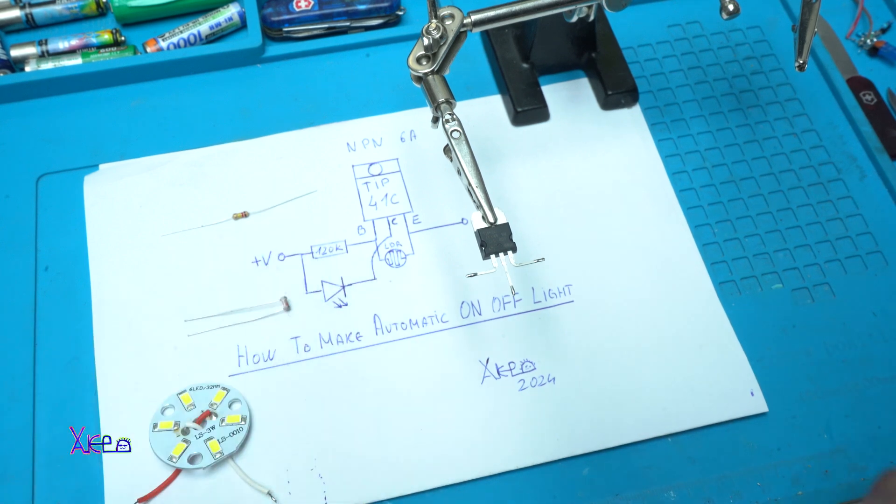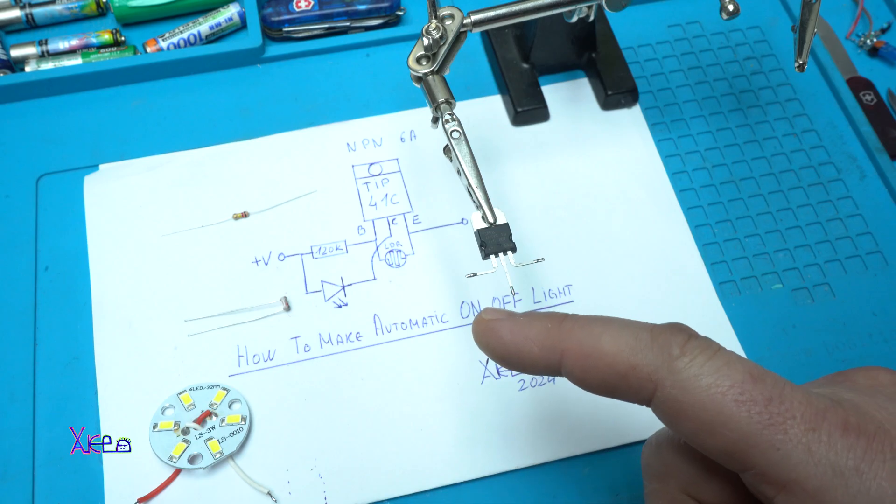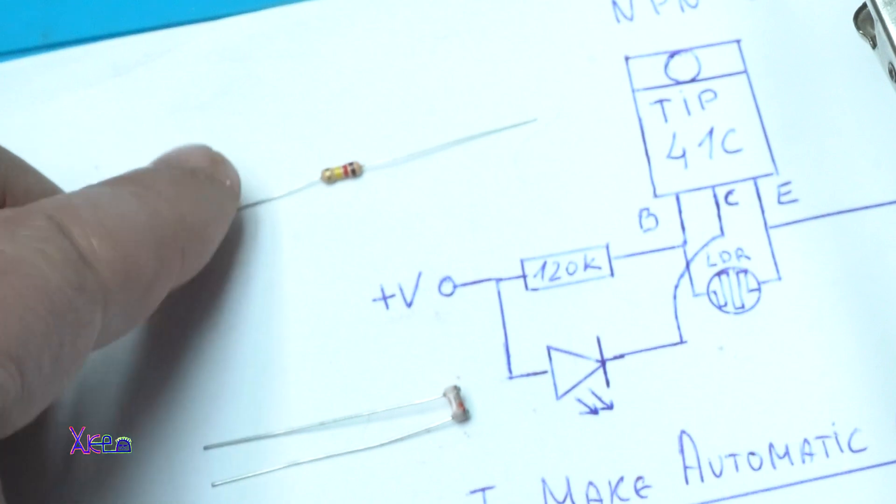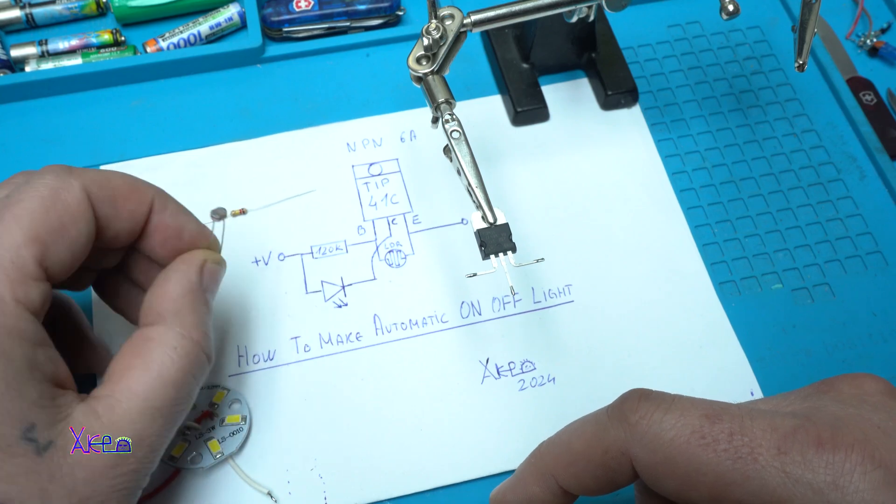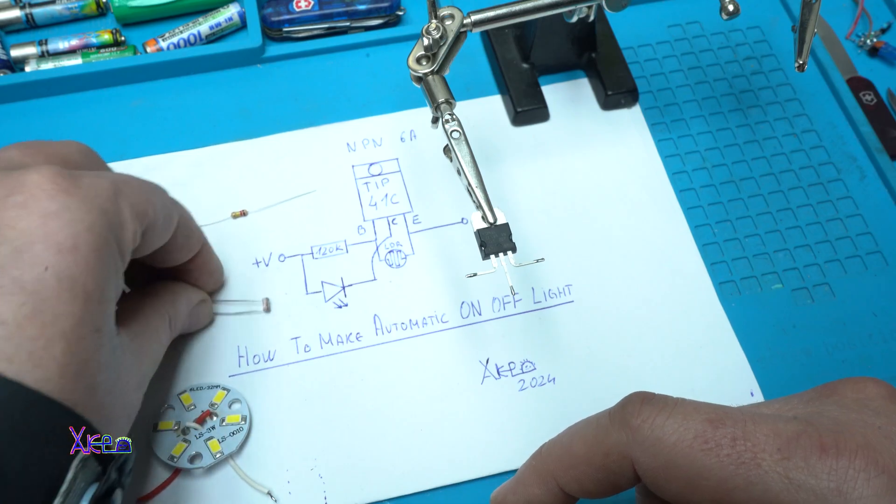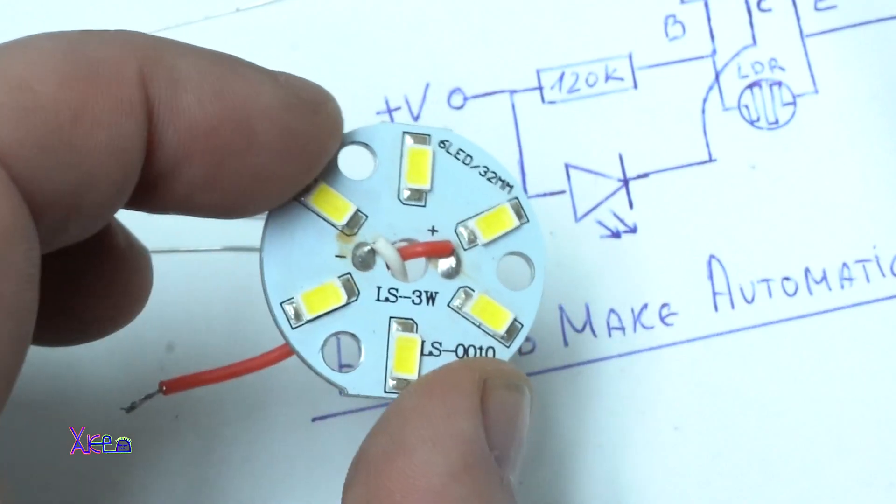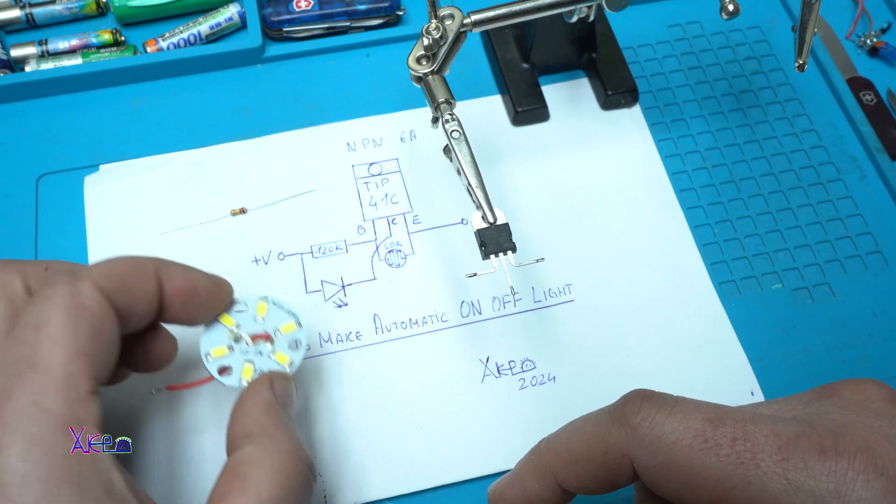As I told you, you'll need only one N-PEN transistor. In this case I'm using TIP41C, a 6 ampere transistor, one resistor of 120 kilohm, a photoresistor LDR, and I'm using this LED light which can work on 12 volts.